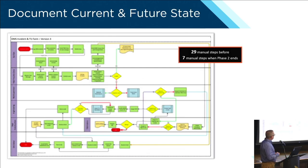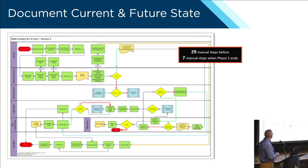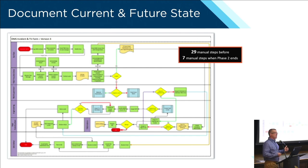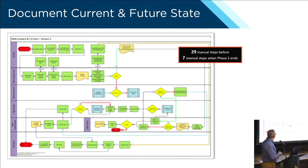We also documented current and future state — what are the problems now, where do you want to be in the future. I blurred this out because the specific content isn't important — what matters is that we identified a lot of manual steps in this workflow around system control and dispatching incidents to trouble crews, and what happens downstream once work gets closed out. Eventually we got this down to just seven manual steps during this plan.